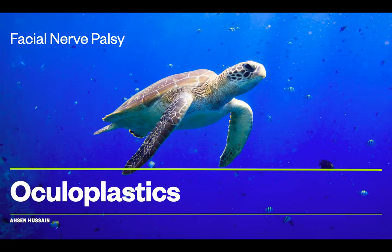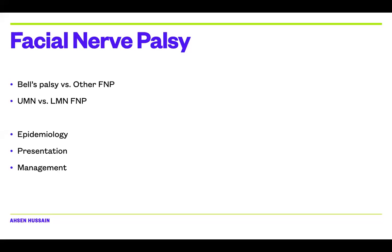Facial nerve palsy is a very big topic — we could talk about this for hours; it's an interest of mine. What I'll try to do is cover some of the fundamental things you should know about. The very first thing to say is that you must differentiate Bell's palsy versus the other causes of facial nerve palsy. Not all facial nerve palsy is Bell's palsy, because there can be very serious underlying pathology causing it which needs to be investigated — and that may not have been done before the patient saw you.